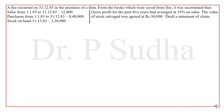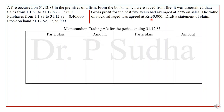Now let us see a few examples. The first question: gross profit for the past five years had averaged at 30% on sales. The value of stock salvaged was agreed at Rs. 30,000. We have to draft a statement of claim. We will prepare a memorandum trading account for the period ending 31-12-83.